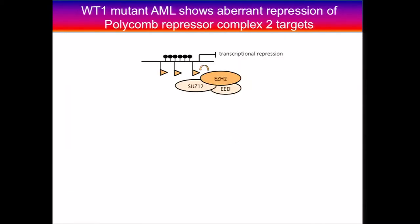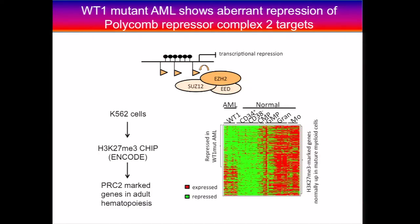To give you a quick review of what the PRC2 complex is: it's known to be a master regulator of differentiation events throughout development, and it has three components, one of which is EZH2 — the catalytic component with histone methyltransferase activity — which is supposed to induce the H3K27 mark, a known mark of transcriptional repression. So is it possible that the WT1 mutation is actually causing dysregulation of PRC2 targets in AML? Our preliminary analysis suggests that is indeed the case.